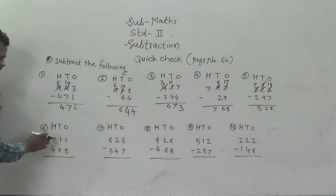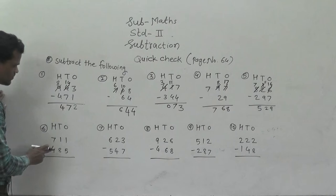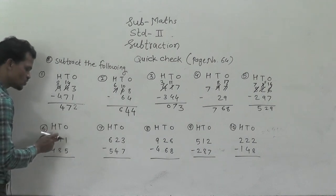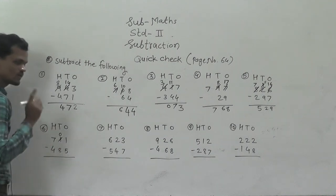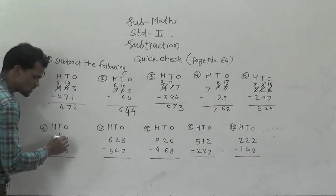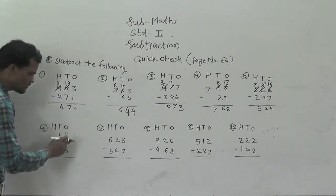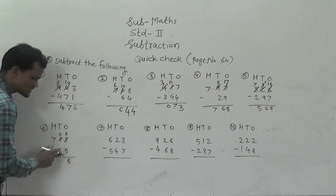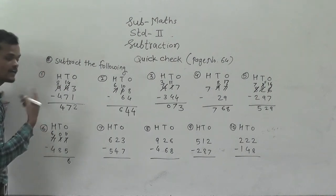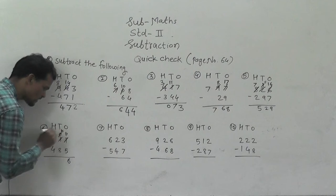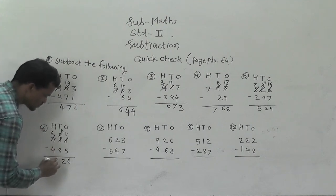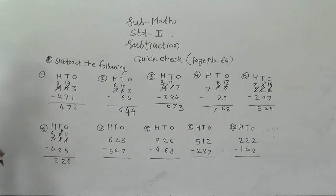Next example: 711 minus 485. Start from the ones place: 1 minus 5 — not possible. So regroup this 1 ten into 0 tens and 10 ones. 10 plus this 1 means 11 ones. 11 minus 5 is 6. Then 0 minus 8 — not possible. So regroup this 700 into 600 and 10 tens, and write those 10 tens in the tens column. Now 10 minus 8 is 2, and 6 minus 4 is 2. So 226 is the answer.